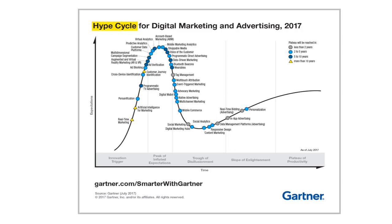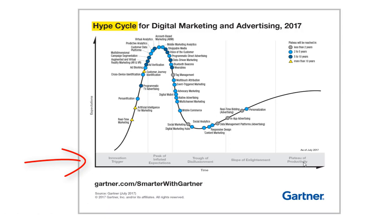For now let's review the hype cycle graph in more detail. As we can see, the hype cycle is a graphical representation that shows a new technology's progression through five distinct phases that start at the innovation trigger and eventually reach the final phase of the plateau of productivity, where it is considered mature and mainstream.